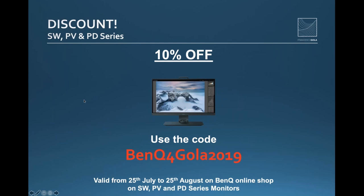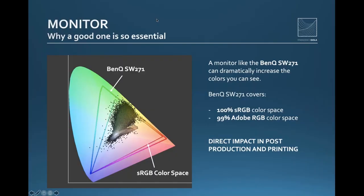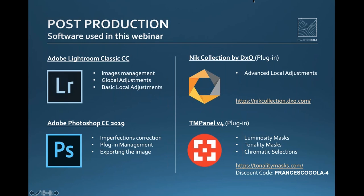Another question: what is the TM Panel used in Photoshop? The TM Panel, as you saw from the chart, is a plugin for Photoshop that allows me to create luminosity and tonality masks for advanced local adjustments — giving me control over real image details in a super easy way. You can find the website and a discount code in the materials you'll receive from BenQ after this presentation. The webinar recording will also be shared with you.